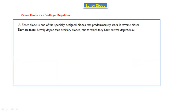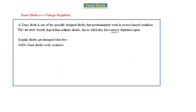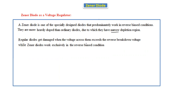Now let's see why the Zener diode acts as a voltage regulator. A Zener diode is a specially designed diode that predominantly works in the reverse biased condition; in forward bias it behaves the same as a PN junction diode. The advantage is in the reverse bias condition. Zener diodes are more heavily doped than ordinary diodes, due to which they have a narrow depletion region.